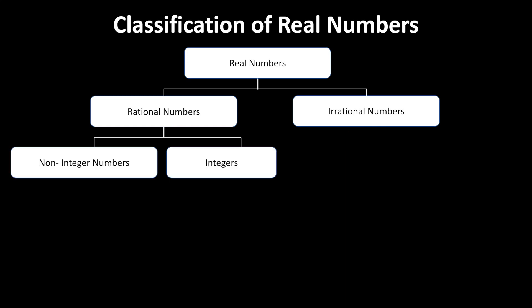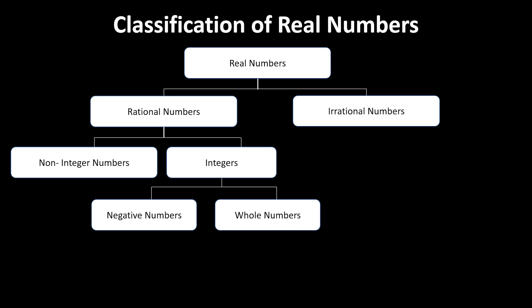Rational numbers are basically the union of non-integer numbers and integers. Non-integer numbers are numbers that have a decimal expansion — for example, 0.7, 0.32, 0.5. They all have decimal expansions, so they are called non-integer numbers. Integer numbers are a combination of negative numbers, 0, and positive numbers — for example, minus 1, 0, and 1.